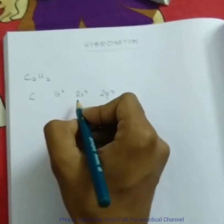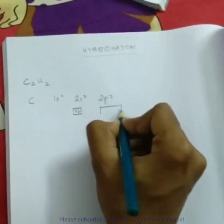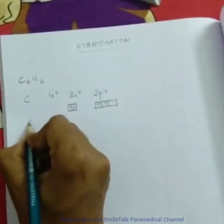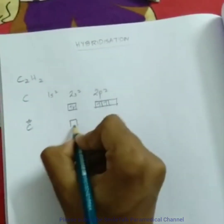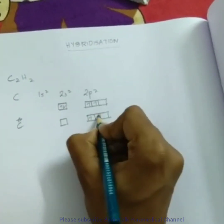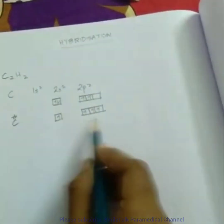And 2p2 orbital. Here we have two electrons and here we have two. Through excitation we receive this type of structure.